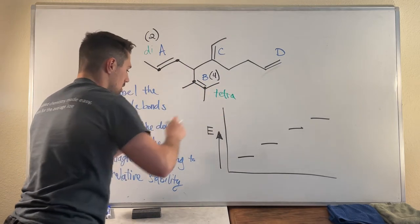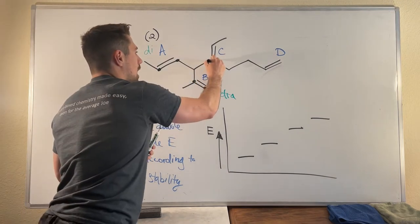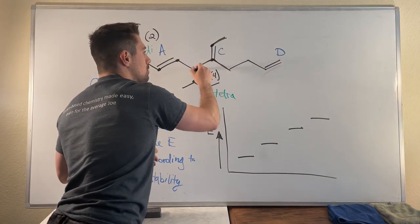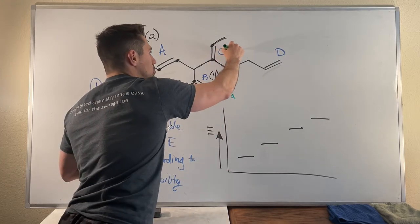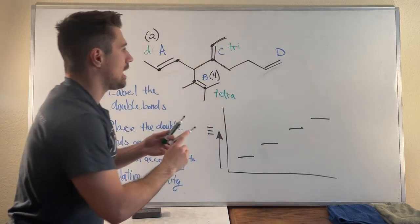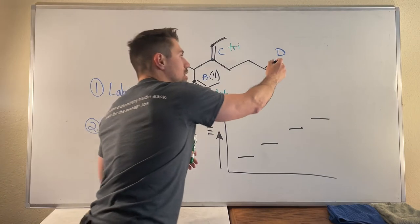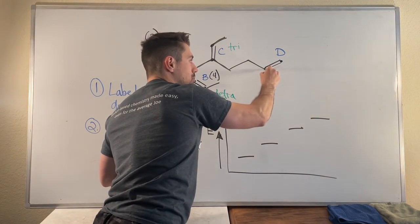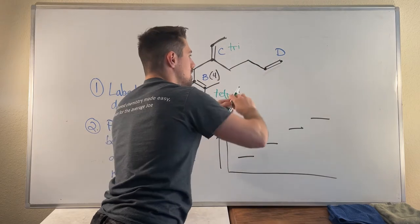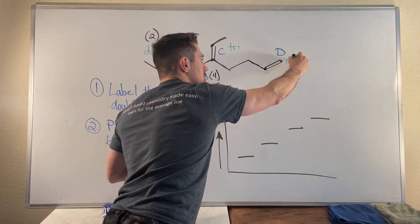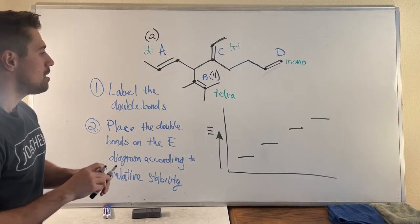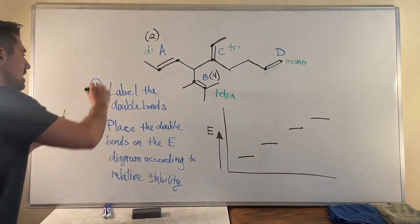We play the same game with C. I see that one, two, three, C will be tri substituted. And if we look over at D, this terminal carbon has no bonds to carbon but this one right here has one, so this is mono substituted. So we got one of each type here right.